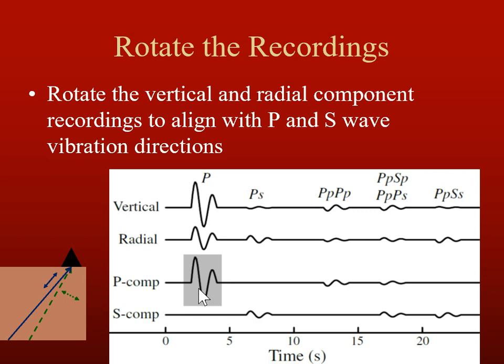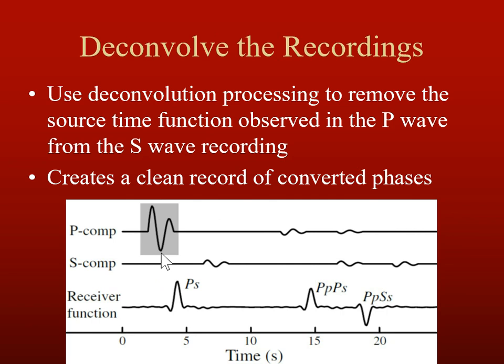We deconvolve the P wave energy from the S wave, and what we're returned is a spike-type function — the complex waveform is removed and we're left with an upward spike. The last phase has a downward spike because it travels two legs as an S wave, giving it a polarity shift. This gives us a clean timing of when the converted phases happen, and a clean spike we can use to image where those recorded phases are occurring and determine the depth of the layer where that conversion is happening.